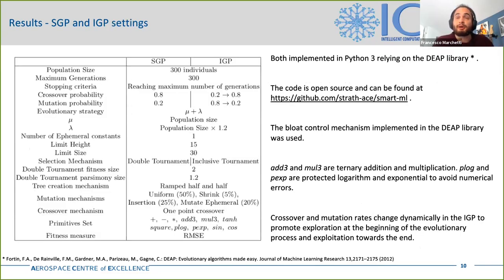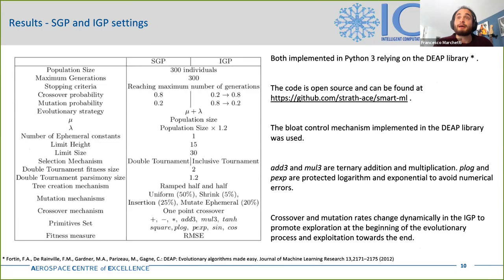To assess the improvements given by the IGP, we compared it with the classical GP formulation, which we refer to as SGP. They were set as shown in this table, and the goal was to configure them in the most similar way so as to isolate only the benefits introduced by the new modifications. They were both coded in Python, relying on the open-source library DEAP, and the developed code is open source and can be found at the link shown here. A population of 300 individuals was used for 300 generations. For the IGP, the mutation rate starts at 0.8 and the crossover rate starts at 0.2. This mechanism was tested on the SGP but didn't lead to any significant difference, so we decided to keep the mutation and crossover rates fixed for the SGP.